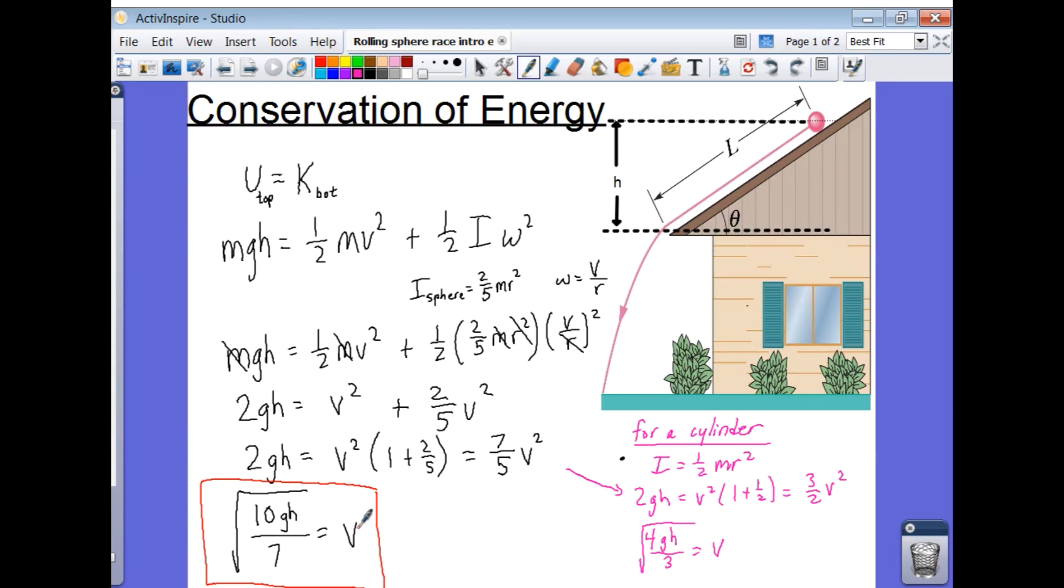And we see that the velocity of the sphere depends only upon gravity and the height that it started from. The same thing goes over here if I did it for a cylinder. I still see the same thing, that the final velocity is not dependent upon the mass of the object or its radius.